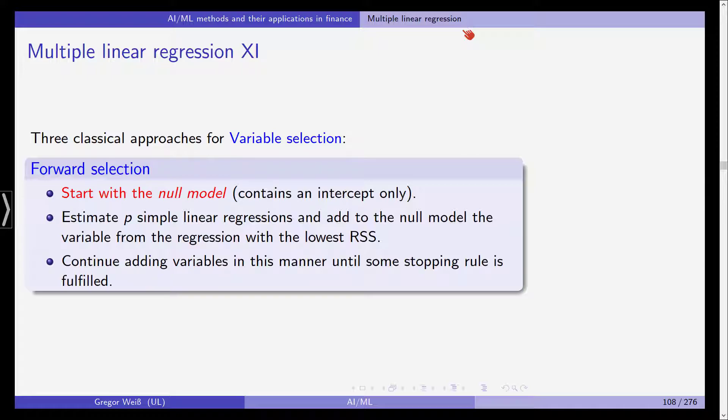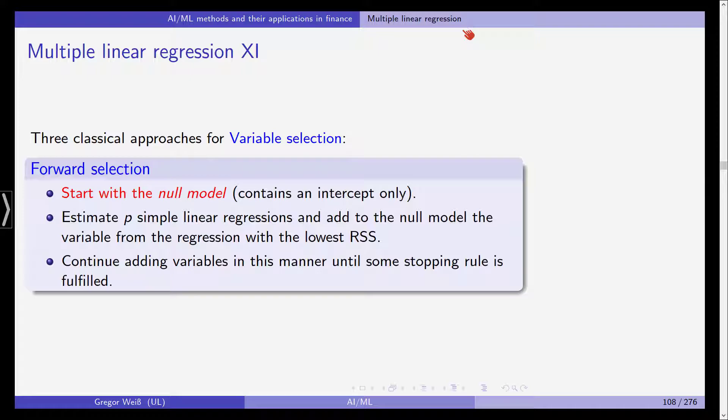The first one is forward selection. You start with the null model, which only includes the intercept and no predictor at all. You estimate P simple linear regressions and then add to the null model the variable from the regression with the lowest RSS. And you continue adding variables in this manner until some stopping rule is fulfilled. For example, you would start with an intercept and then maybe add X3, then you would add X1 and maybe your stopping rule is already fulfilled. So you will stop with just two predictors.